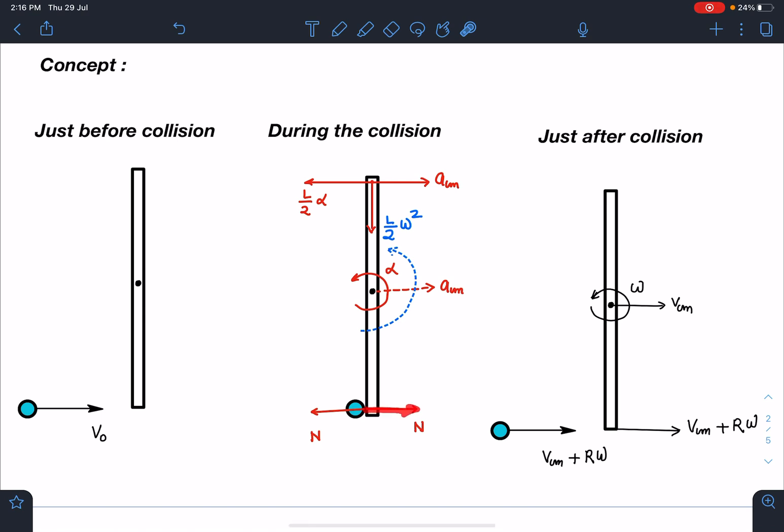During the collision, there will be an impulsive normal reaction that will give impulse and angular impulse, both linear impulse and angular impulse. During that small interval of time, the center of mass will have some acceleration ACM, and there will be angular acceleration alpha. Of course, omega is also developing. Let's say the instantaneous value of omega is some general omega.